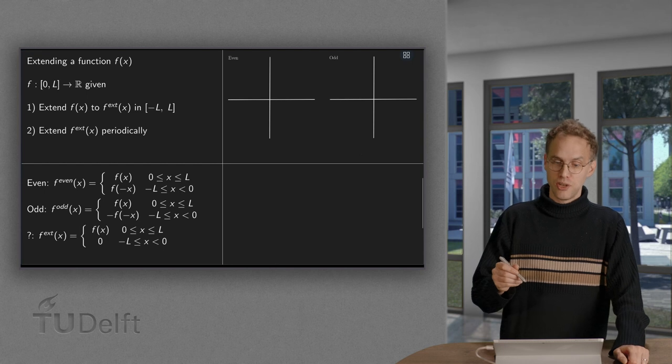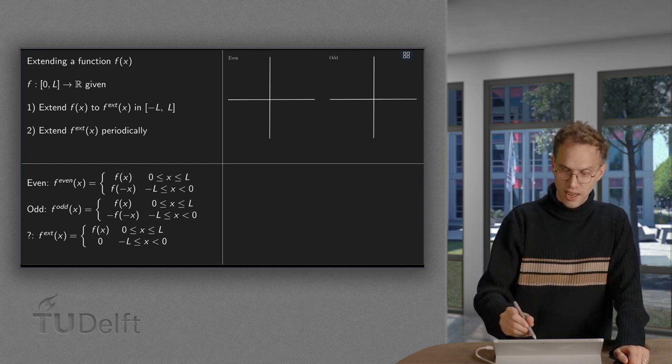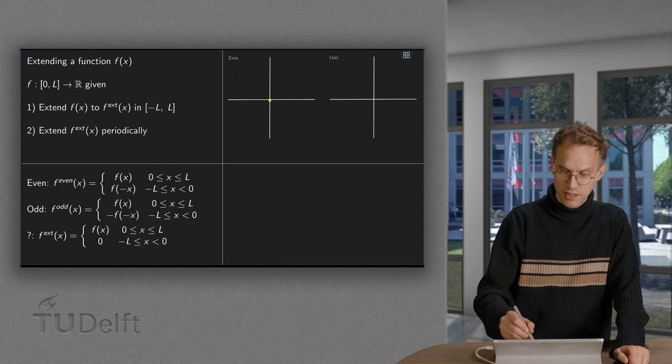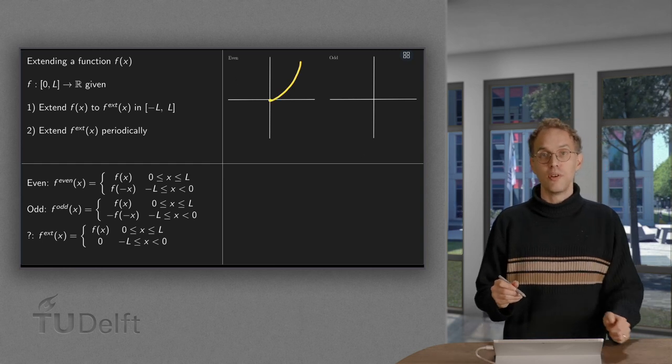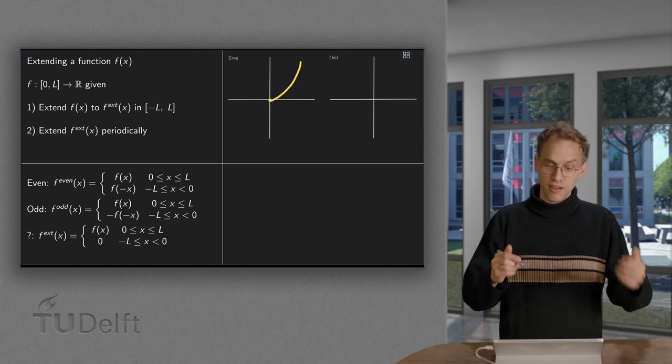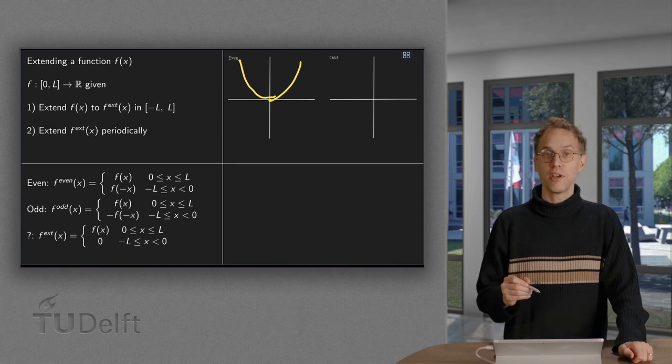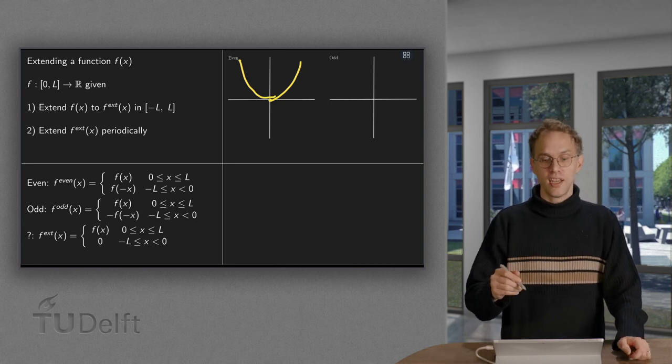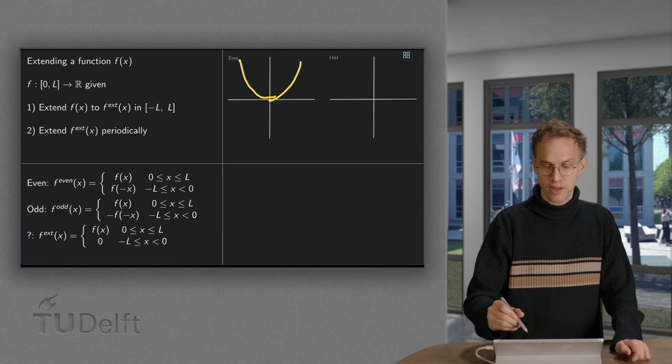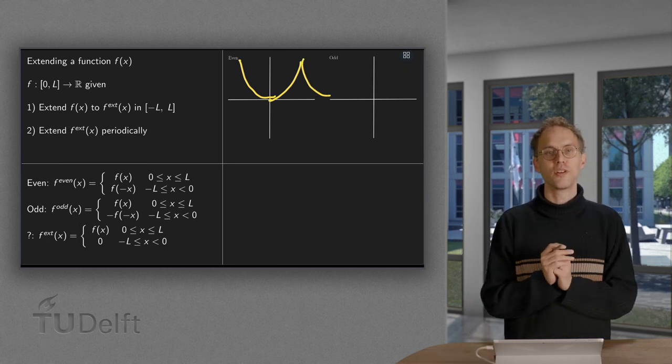So how does this look? So suppose we have some function f(x), something like this. How do we find an even extension? Now then we make an even function out of it, so we basically mirror in the y-axis, so there we go, there we have our even extension, and then you can continue this pattern periodically, so you get something like this and so on and so forth.